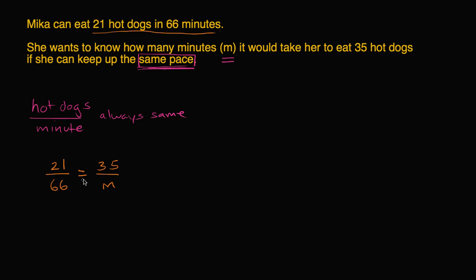We're dealing with a proportional relationship — it's going to be happening at the same rate. And then we're left with a situation where we just have to solve for M. There are a bunch of different ways to tackle this. The easiest way I can think of is: I don't like this M sitting in the denominator, so let's multiply both sides by M.